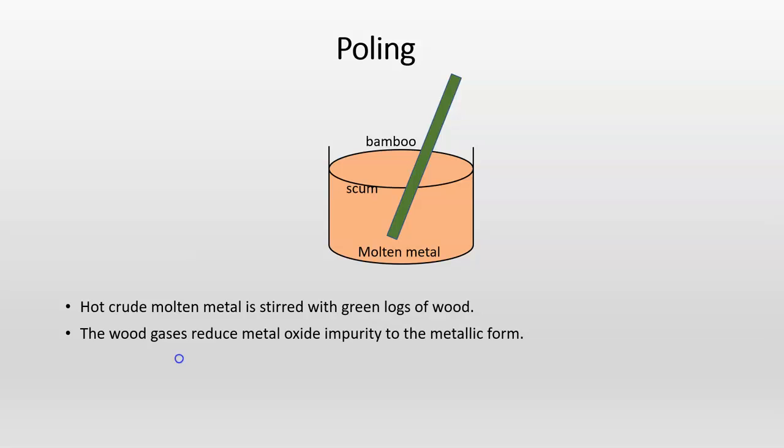The wood gases reduce metal oxide impurity to the metal form. During stirring, large quantity of air is absorbed, and this air oxidizes oxidizable impurities.